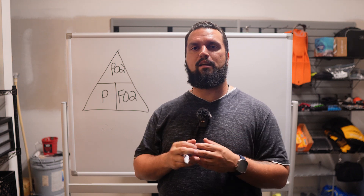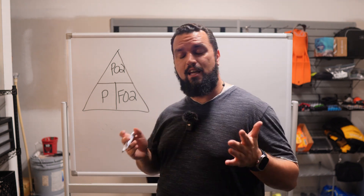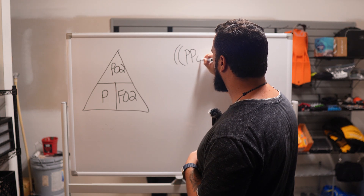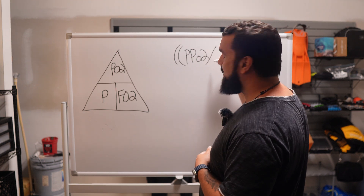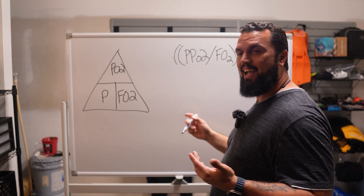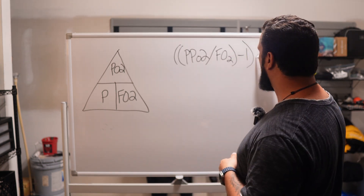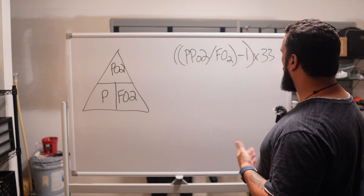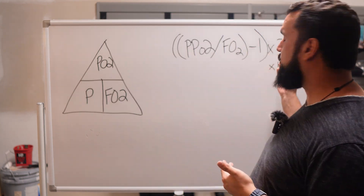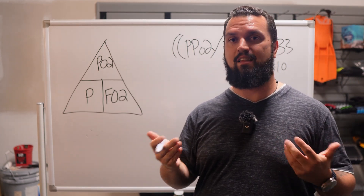All these calculations change a little bit depending on whether we are in feet or meters. For the US I'll be using feet, but I'll show the formula for both. The full formula is: PPO2 divided by FO2, then subtract 1, then multiply by 33 for feet or 10 for meters. In freshwater, change the 33 to 34 for feet; the 10 for meters stays essentially the same.